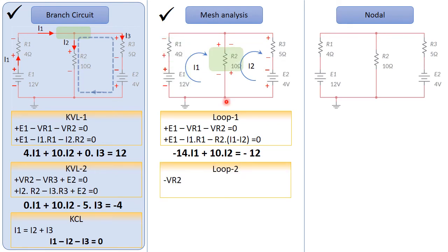Now, we go to the second loop. The second loop, we have minus VR2, minus VR3, plus E2 equals 0. Then we find the value of VR2, which is I2 minus I1 multiplied by R2, because we assume that this current here now is the highest current.